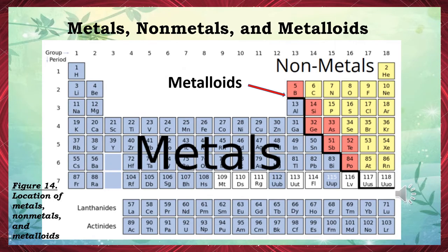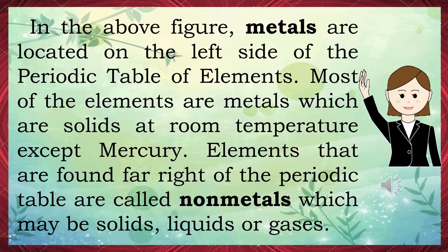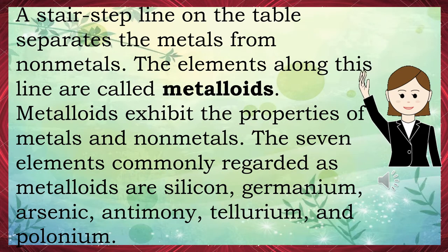Metals, nonmetals, and metalloids. Metals are located on the left side of the periodic table. Most elements are metals, which are solids at room temperature except mercury. Elements found far right of the periodic table are called nonmetals, which may be solids, liquids, or gases. A stair-step line on the table separates the metals from nonmetals. The elements along this line are called metalloids.